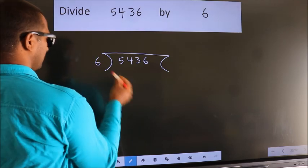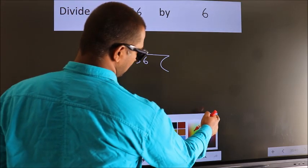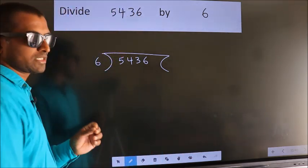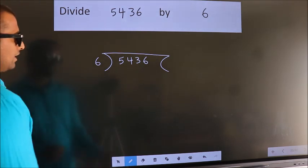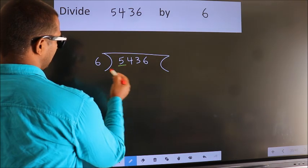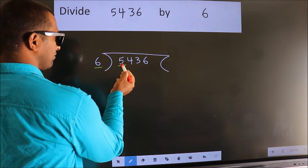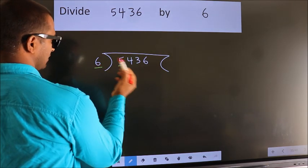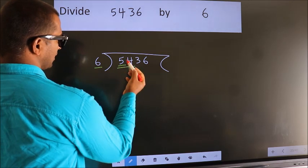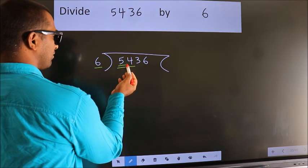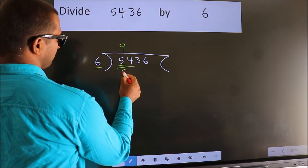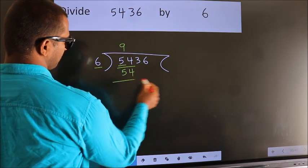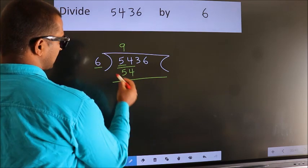6 here. This is your step 1. Next, here we have 5. 5 is smaller than 6, so we should take two numbers: 54. When do we get 54 in the sixth table? 6 nines is 54. Now we should subtract.